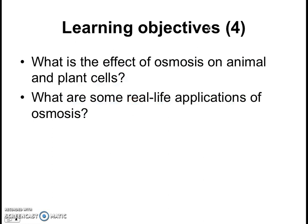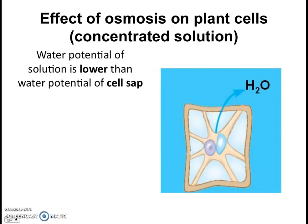The rest of this lesson will be covering mainly the effect of osmosis on animal and plant cells — what happens when we place animal cells and plant cells into different environments. So let's start with plant cells and the effect of osmosis on plant cells.